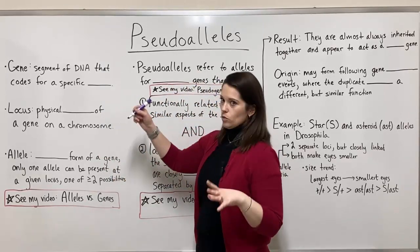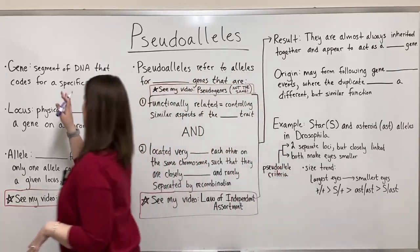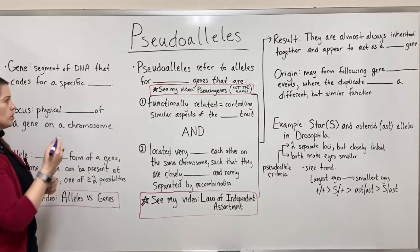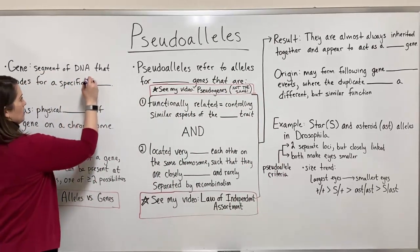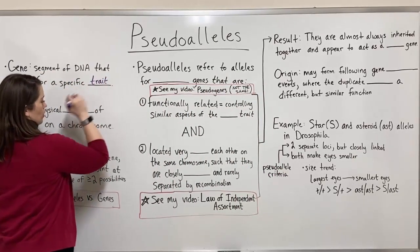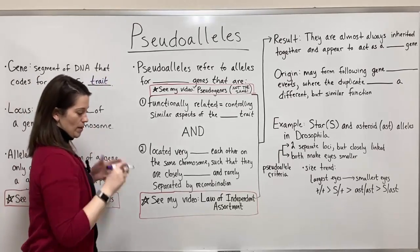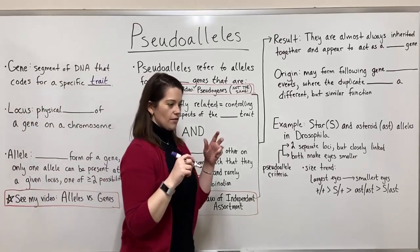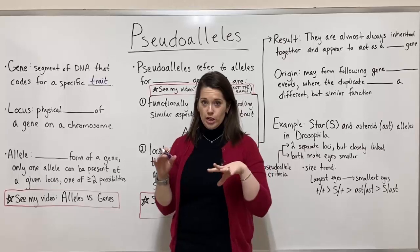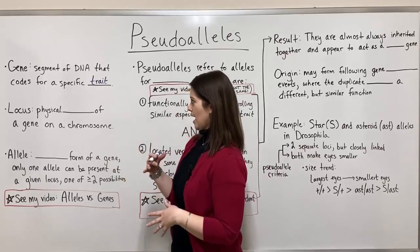First we'll talk about gene. What is a gene? It is a segment of DNA that codes for a specific trait. Remember that in humans we have two versions of every gene — we inherit one version from our mom and one version from our dad.